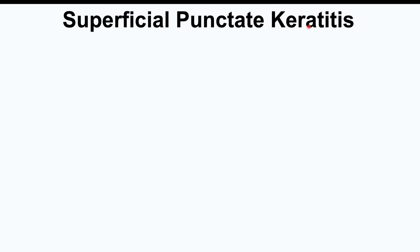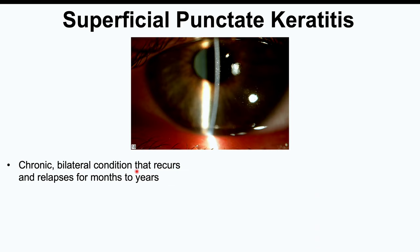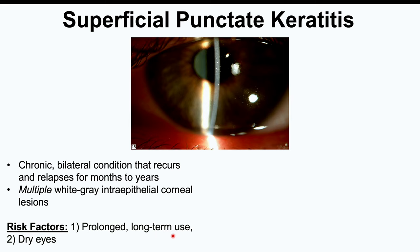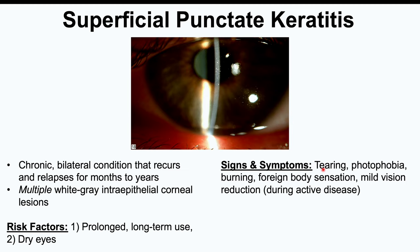The last condition is superficial punctate keratitis — a chronic bilateral condition that recurs and relapses for months to years. It involves multiple white-gray intraepithelial corneal lesions and results in inflammation of the cornea. Risk factors related to contact lens use include prolonged long-term use and having dry eyes — old or expired lenses are more likely to be dried out, increasing risk. Signs and symptoms include tearing, photophobia, burning sensation, foreign body sensation, and mild vision reduction or blurriness, especially during flare-ups.